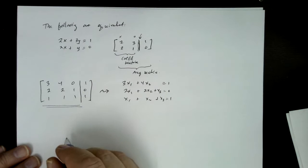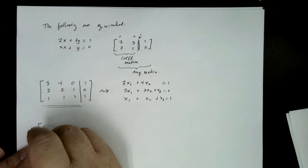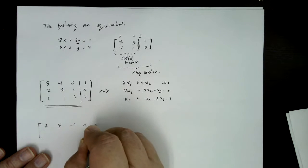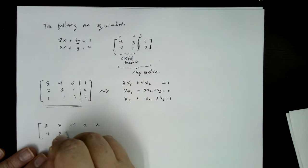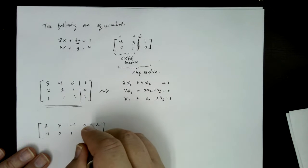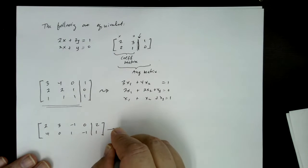So we're going to use the matrix notation. So just for practice then, I could have a matrix like 2, 3, minus 1, 0, 2, 4, 0, 1, negative 1, 1. I could say here's my augmented matrix, write down the corresponding system of equations.